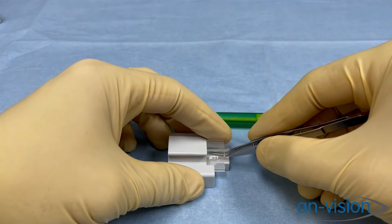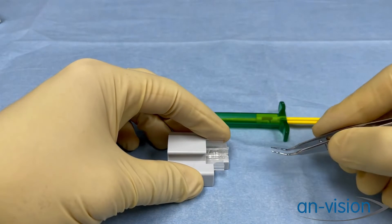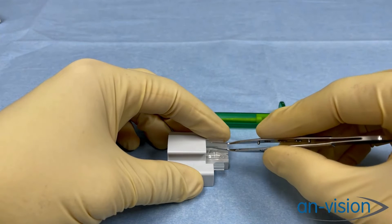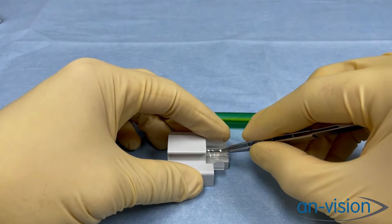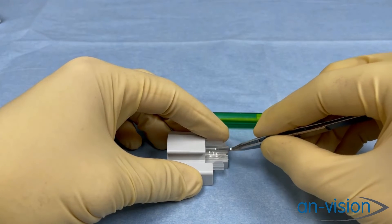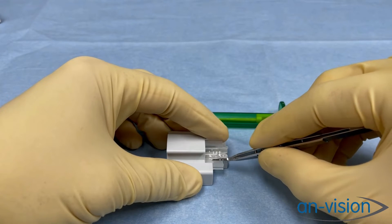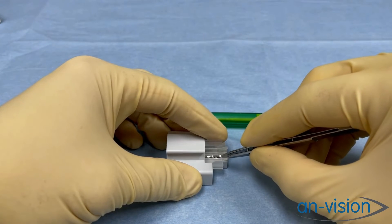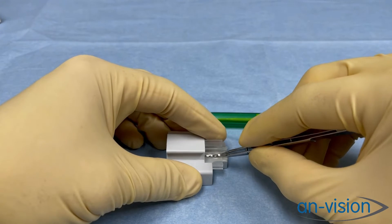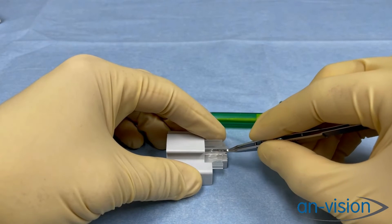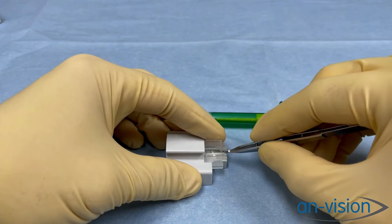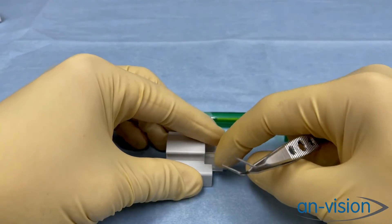At this point, we are able to close our forceps and gently tap the edges of the IOL, sliding down that plastic, making sure those haptics are trapped in the grooves that I mentioned and pointed out earlier.